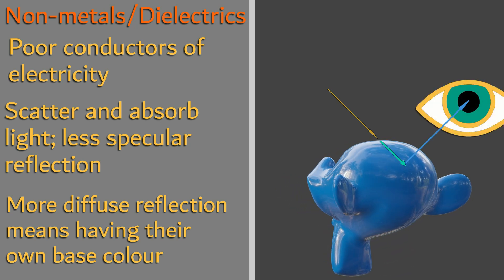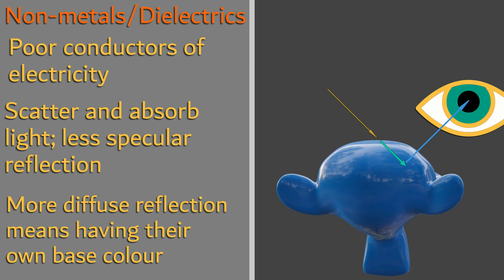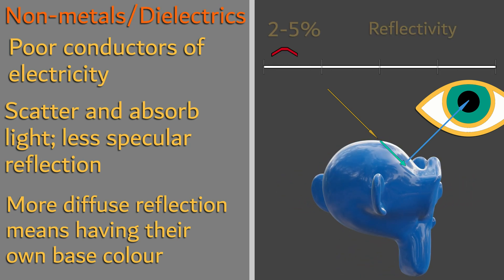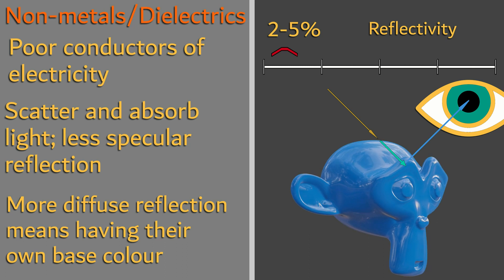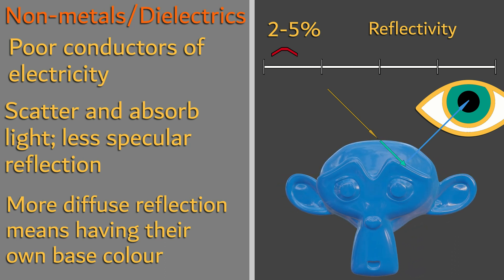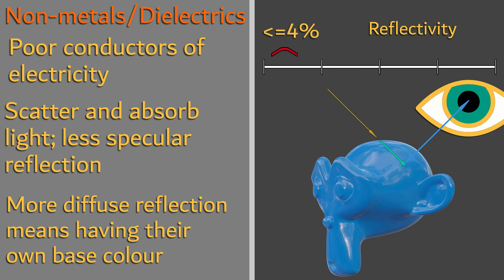In contrast to metals, dielectrics tend to have a significantly lower reflectivity amount, ranging around 2-5%, normally falling on 4% or lower.